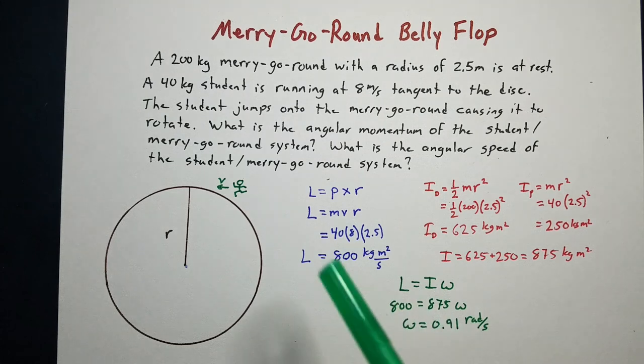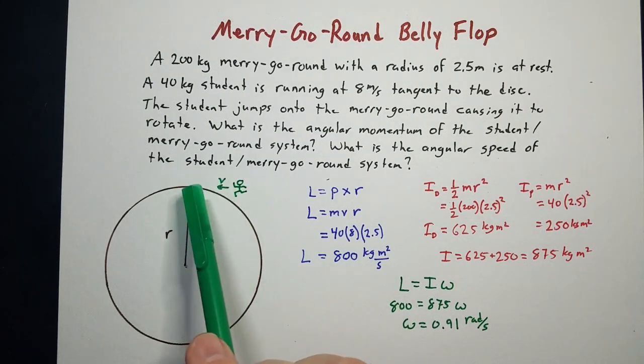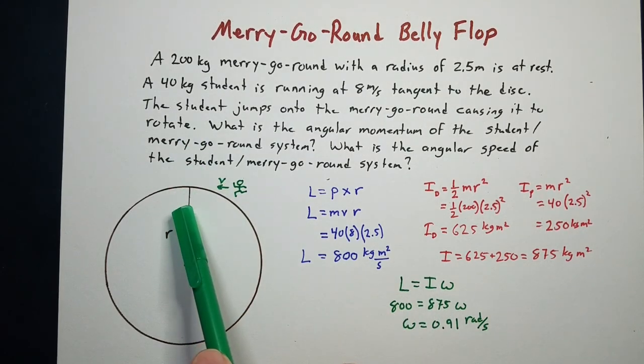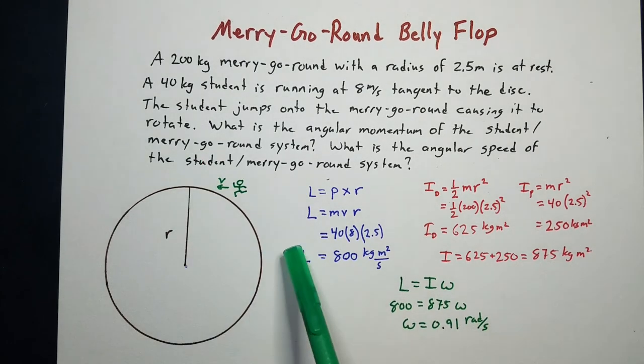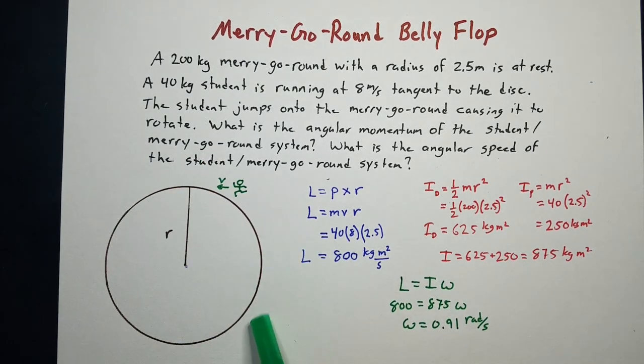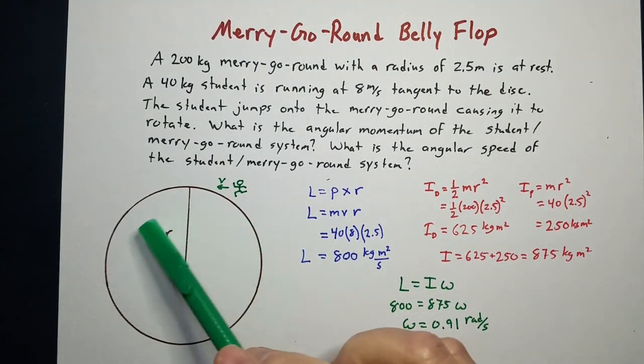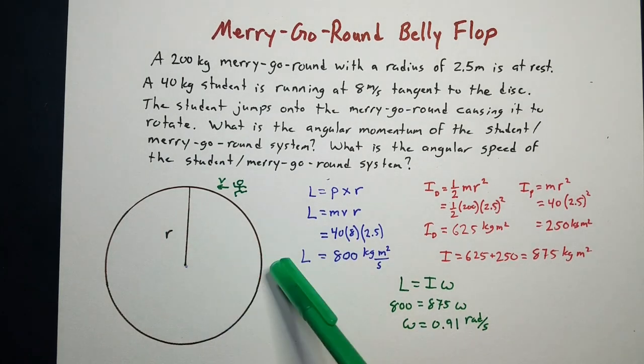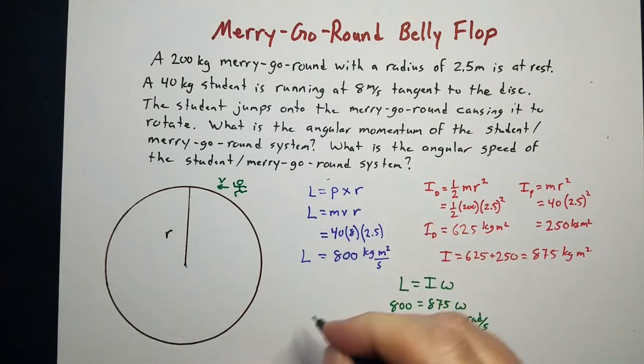Now, what if, instead of running tangent, the student ran straight at it? Well, if the student ran straight at this instead of tangent and hit right here, it wouldn't cause the system to rotate. Nothing will be done between those two because that's a cross product.